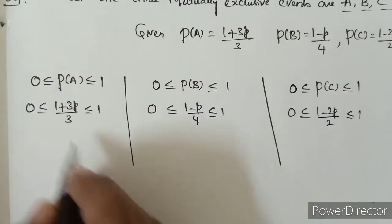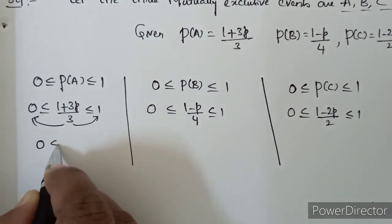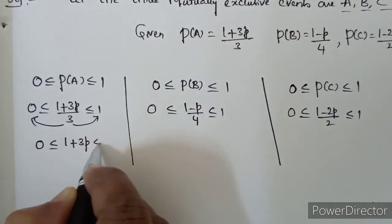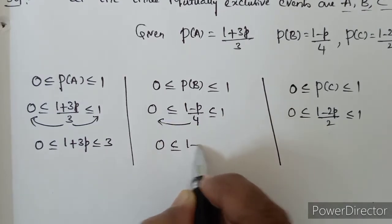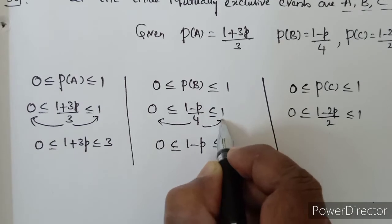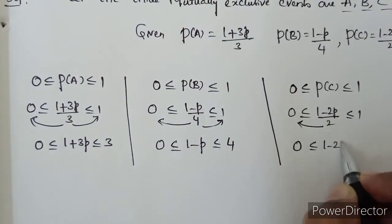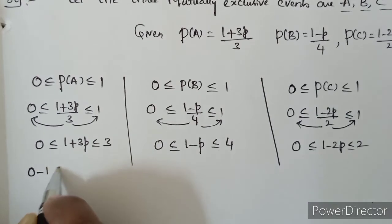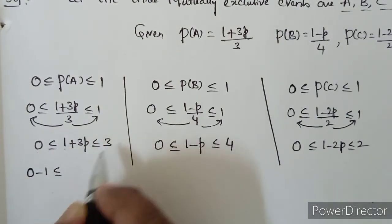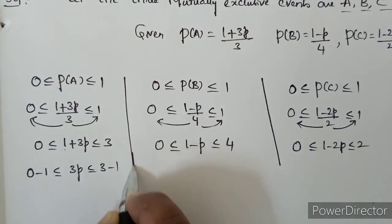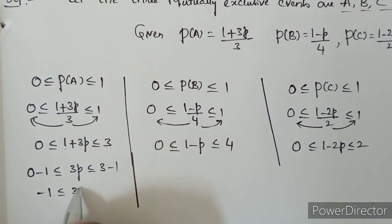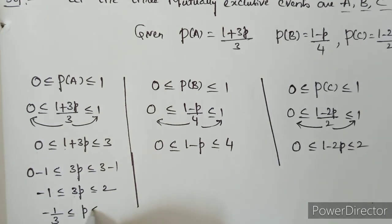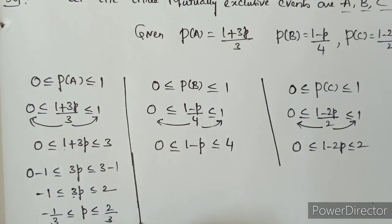Now we cross multiply. For P(A): 0 ≤ 1+3p ≤ 3. For P(B): 0 ≤ 1-p ≤ 4. For P(C): 0 ≤ 1-2p ≤ 2. We bring -1 to both sides: for P(A), -1 ≤ 3p ≤ 2, so -1/3 ≤ p ≤ 2/3. This is brought by dividing by 3 on both sides.